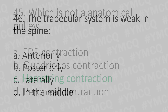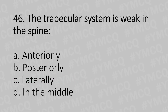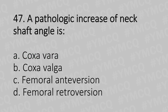Moving to our 46th question. The trabecular system is weak in the spine: Option A: Anteriorly. Option B: Posteriorly. Option C: Laterally. Option D: In the middle. And the answer is Option A: Anteriorly.